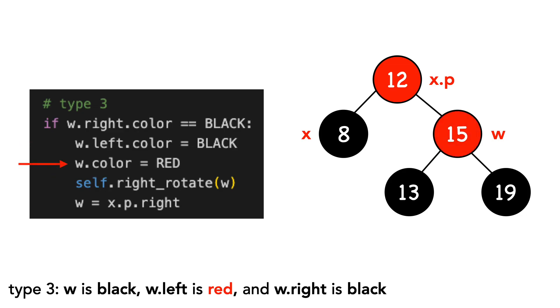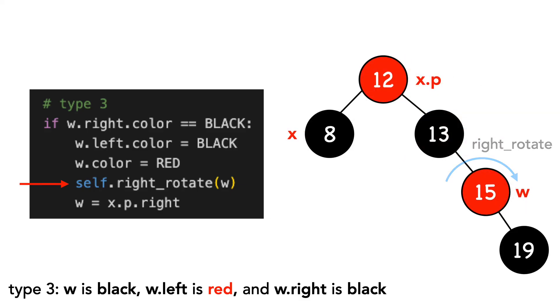We do a right rotation on w. And finally, we reset w as x's sibling.